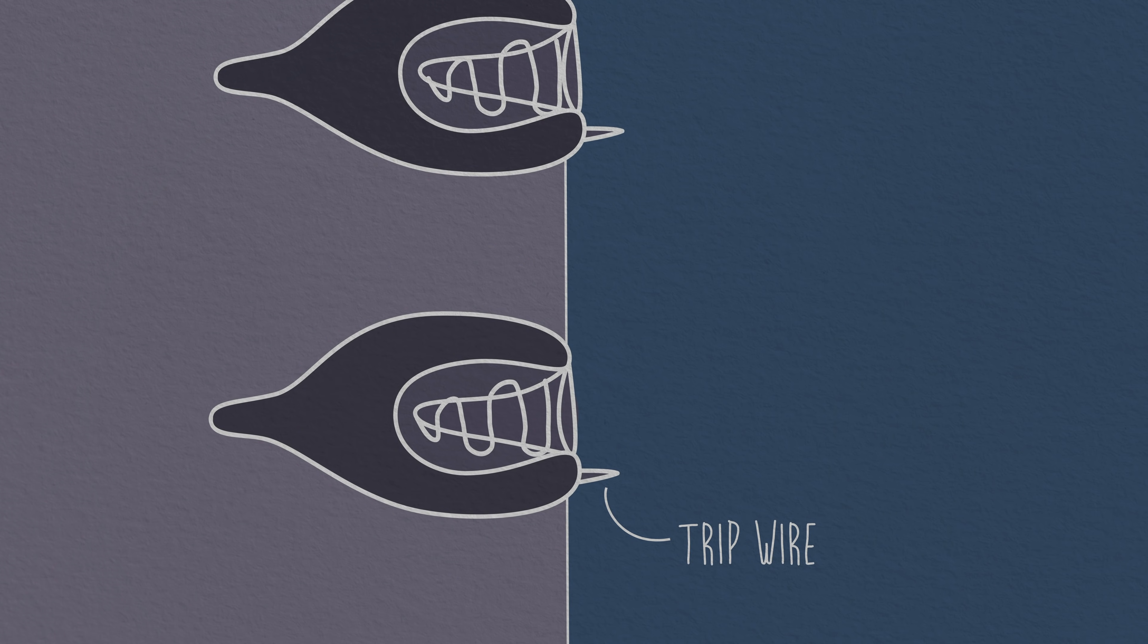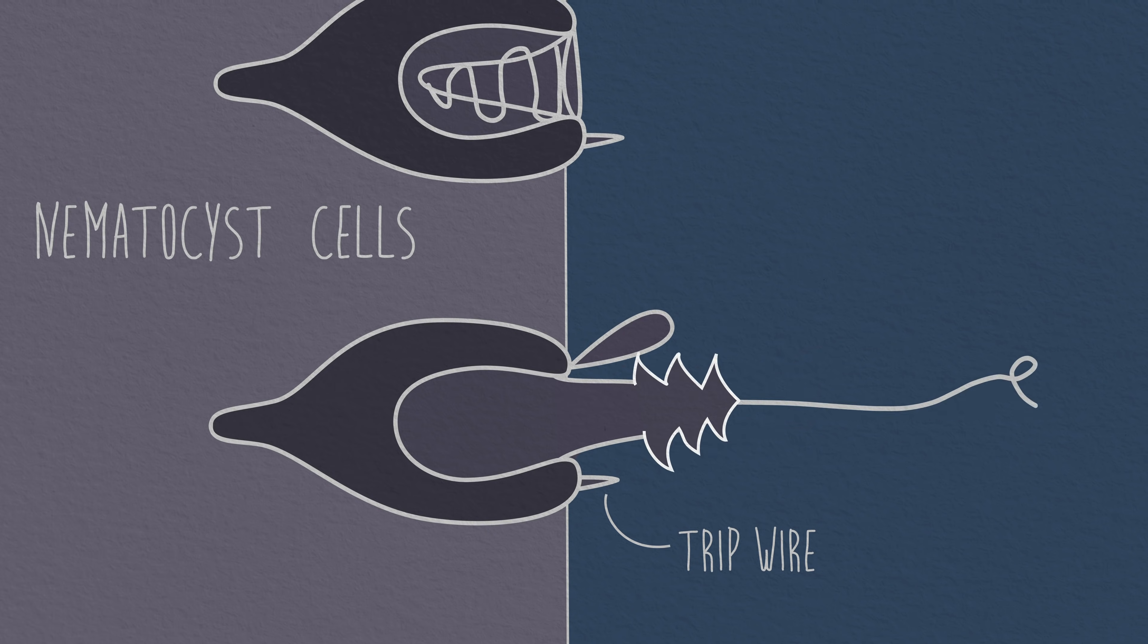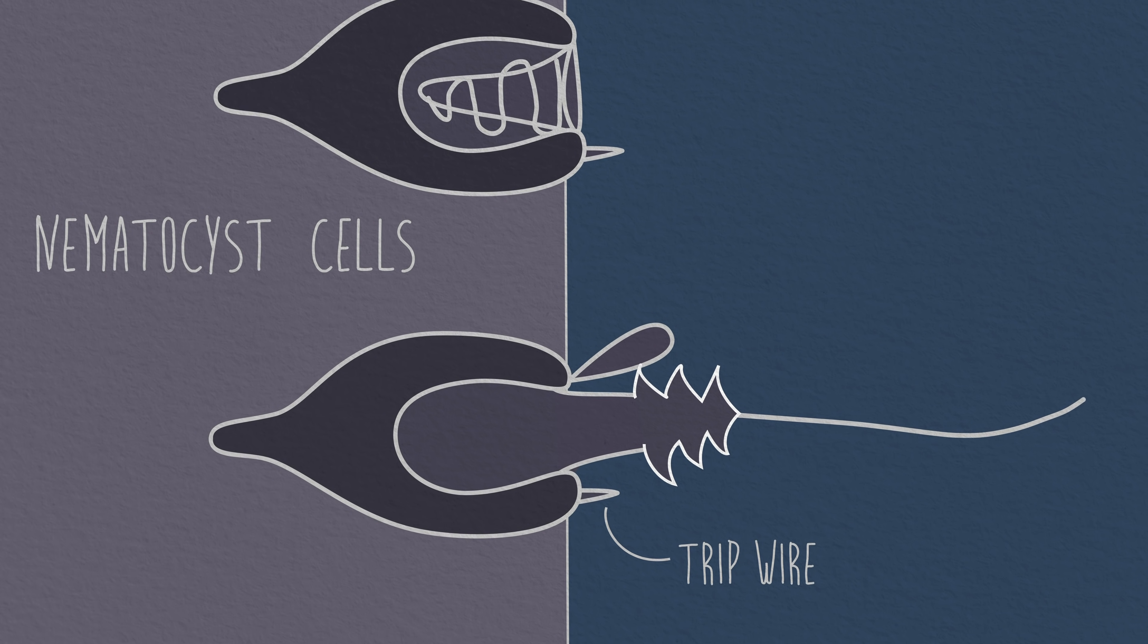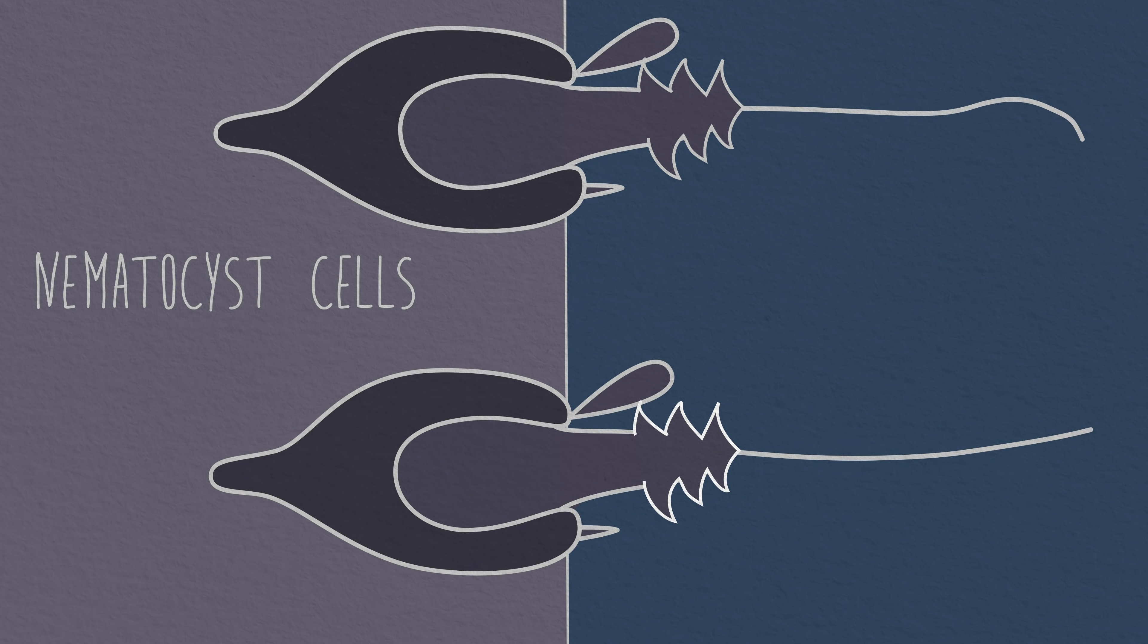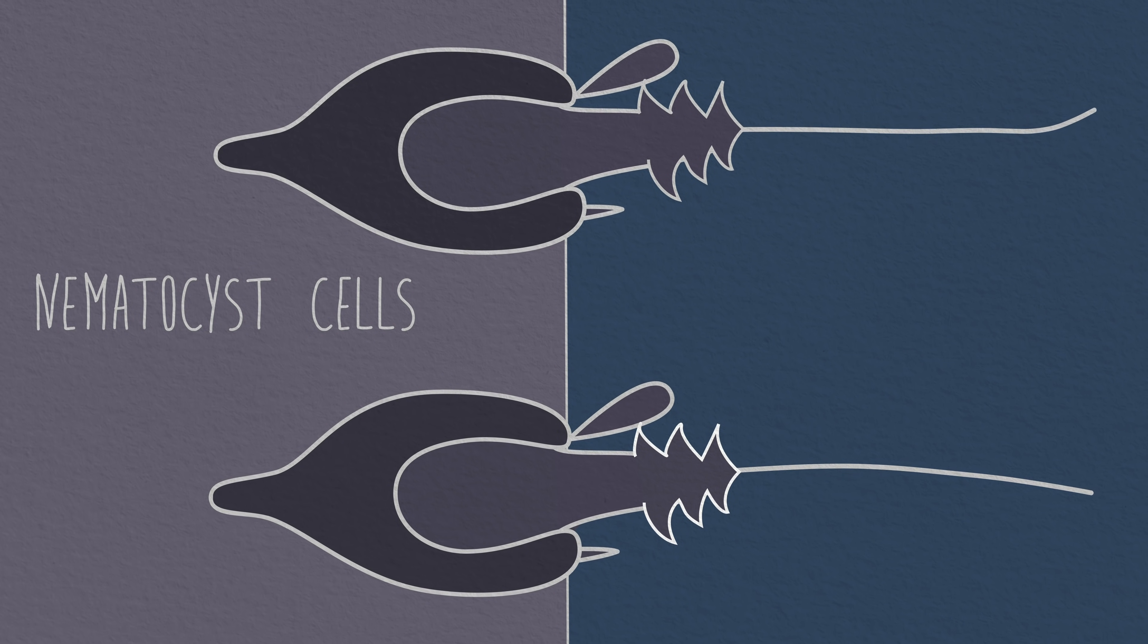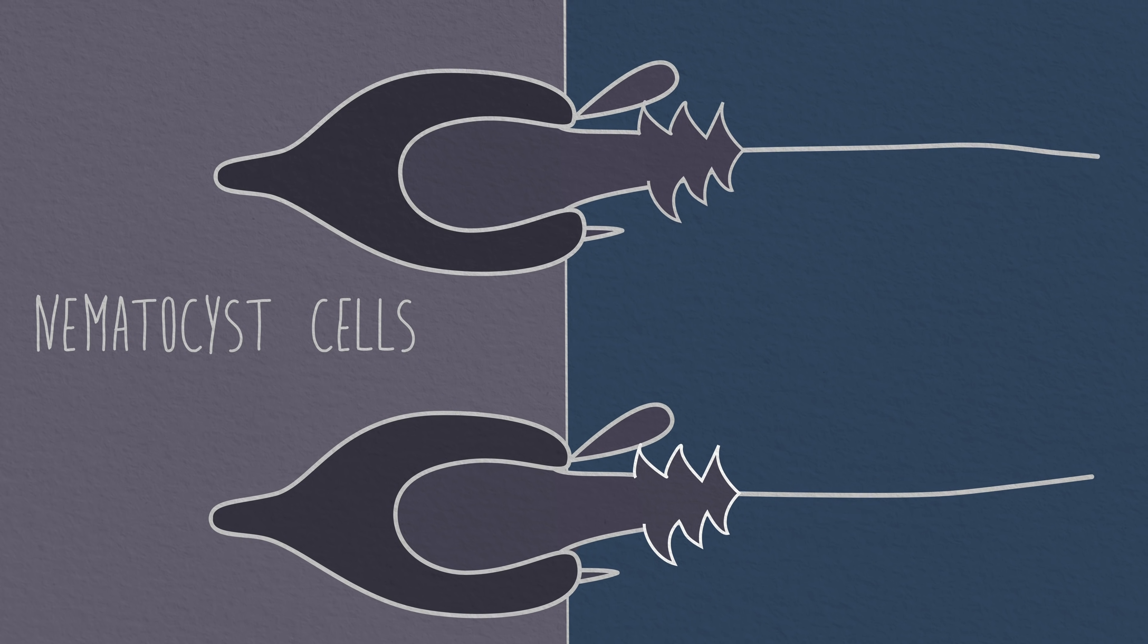It has its own tripwire. When triggered, it fires a harpoon-like barb laced with a powerful toxin. It's one of the fastest mechanisms in the animal kingdom. It explodes with an insane force, 10,000 times that of gravity.